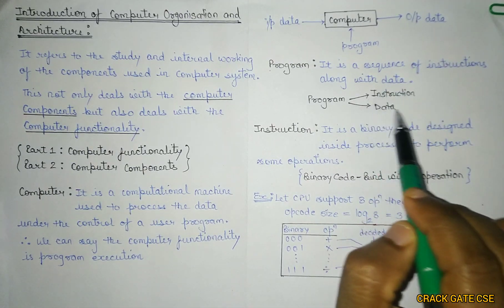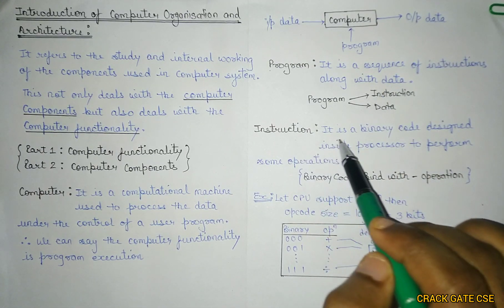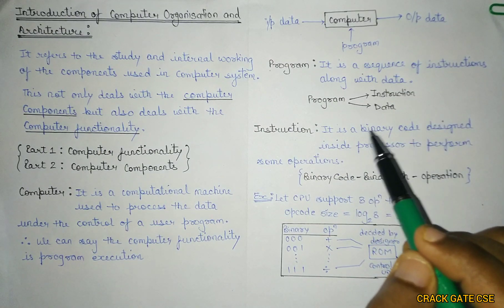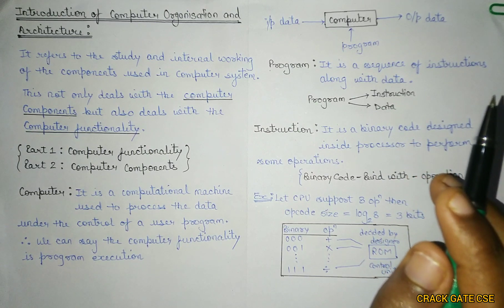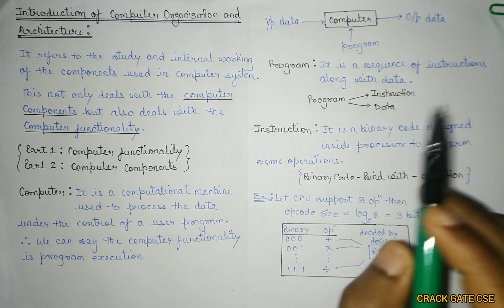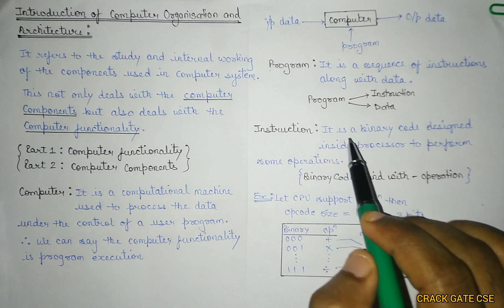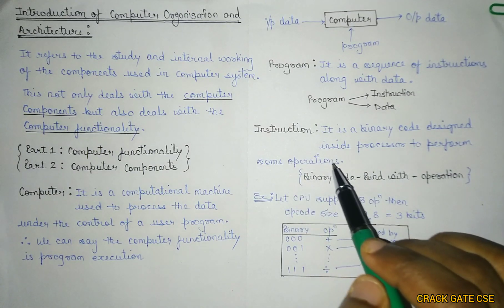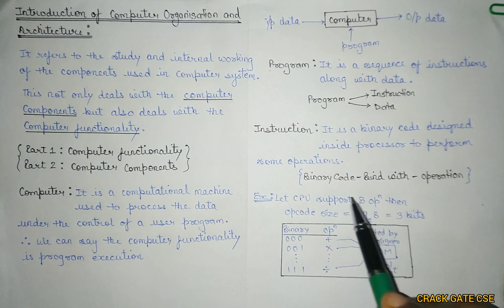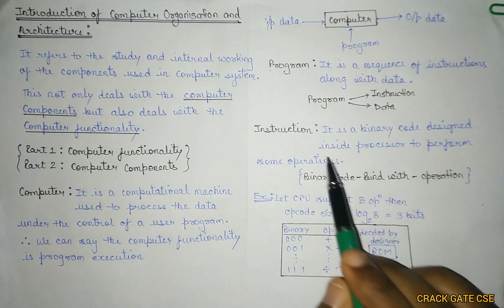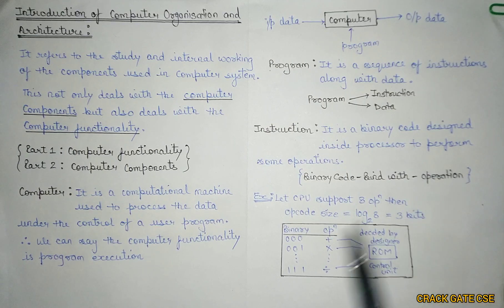What is an instruction? An instruction is a binary code designed inside the processor to perform some operation. We instruct a particular machine to operate or perform some operations. In short, when a binary code is bound with some operation, it is known as an instruction.